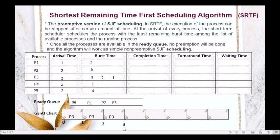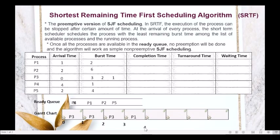At time 3, we check which process arrived in the ready queue. No new process arrived, so the ready queue has P1, P2, and P5. We compare their burst times: P1 is 2, P2 is 6, P5 is 4. P1 has the smallest burst time, so we allocate the CPU to P1. P1 executes for 1 unit of time, from 3 to 4. P1's remaining burst time becomes 1.